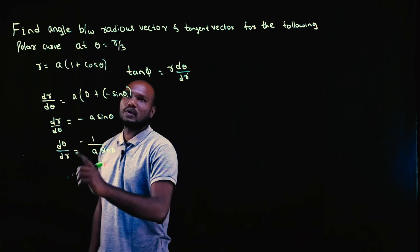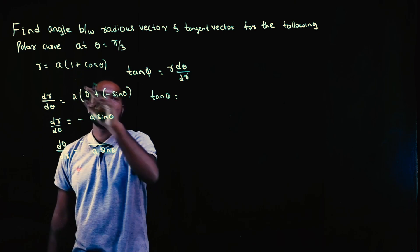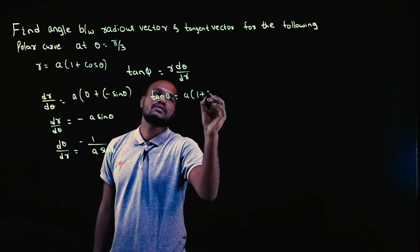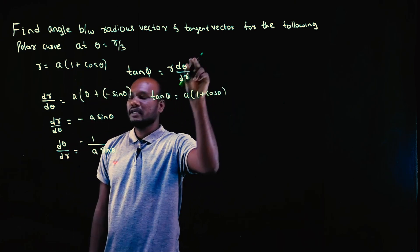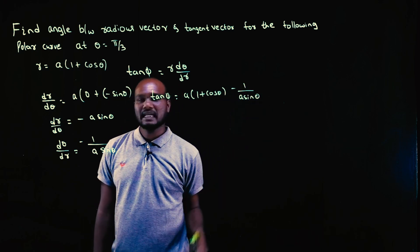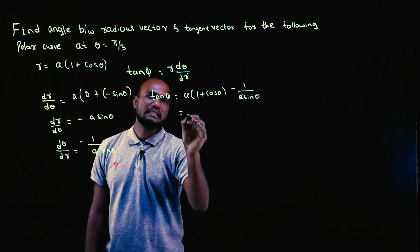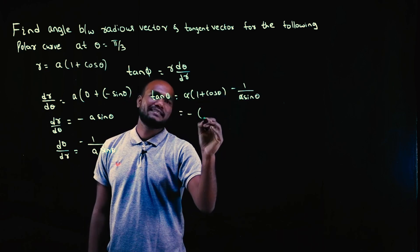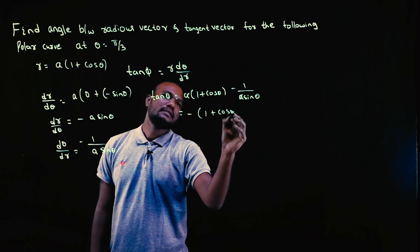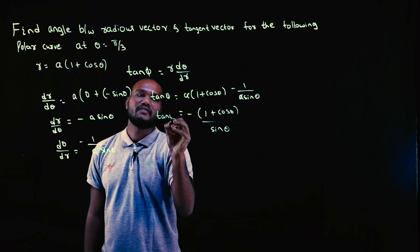Now let's substitute in the formula. R we already have: a times one plus cos theta, and d theta by dr is minus one upon a sine theta. What is cancelling out? This a and this a cancel out. Plus into minus is minus. So we get minus one plus cos theta divided by sine theta. This is the value of tan phi.